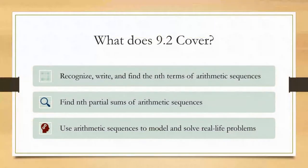Section 9.2 covers recognizing, writing, and finding the nth term of an arithmetic sequence — the sequence is just a list of numbers, so you're finding a specific term, like the first or 10th number. It also covers finding nth partial sums, which is adding the first 10 numbers together for the 10th partial sum, and using arithmetic sequences to model and solve real life problems.